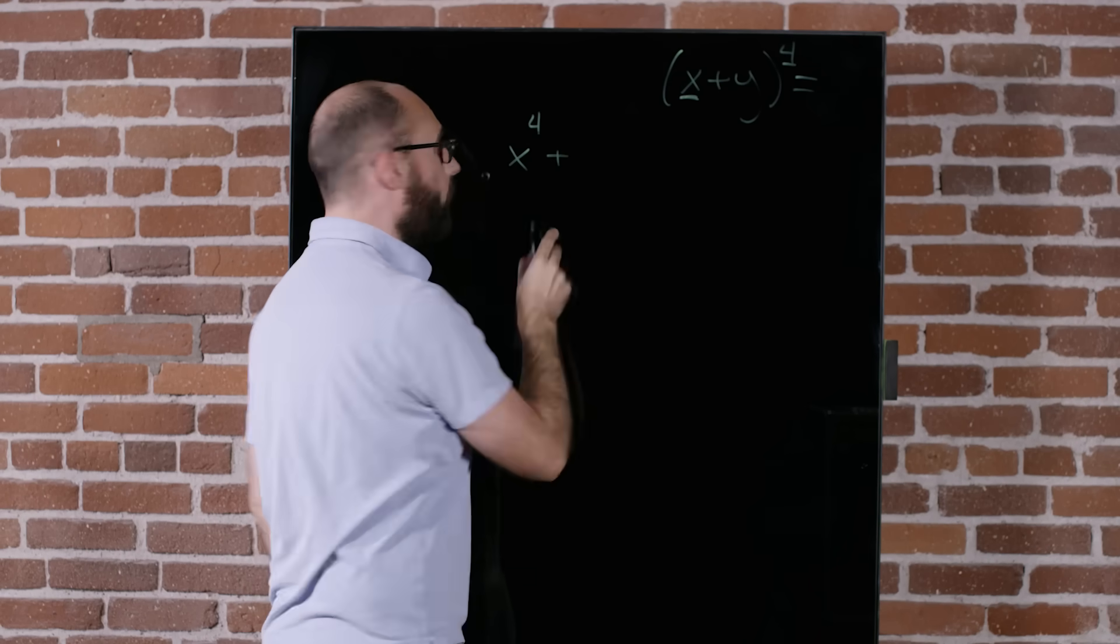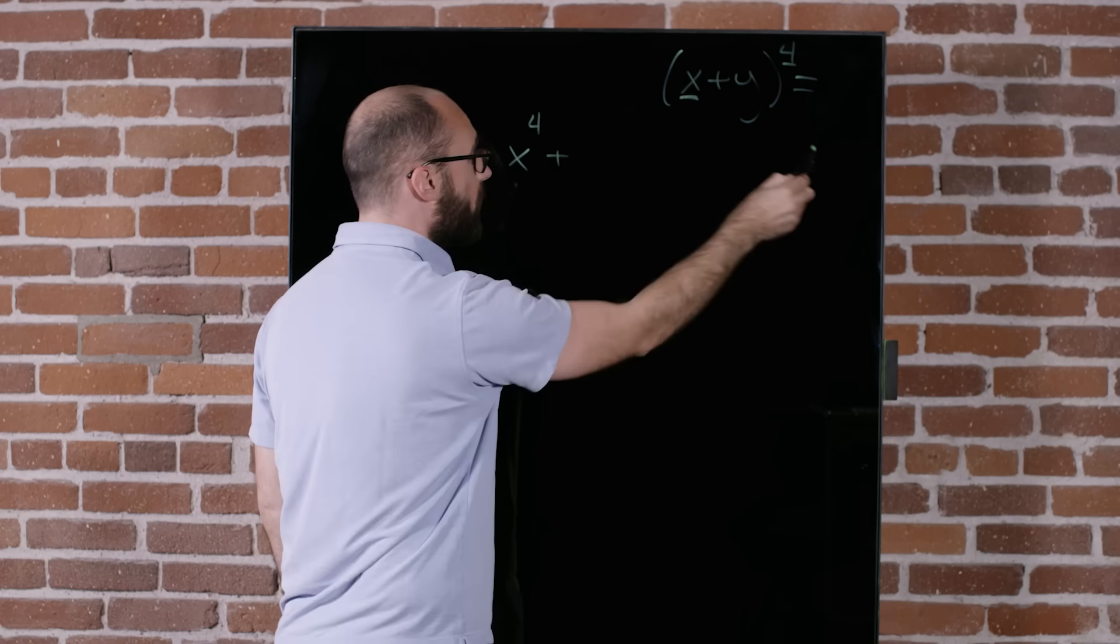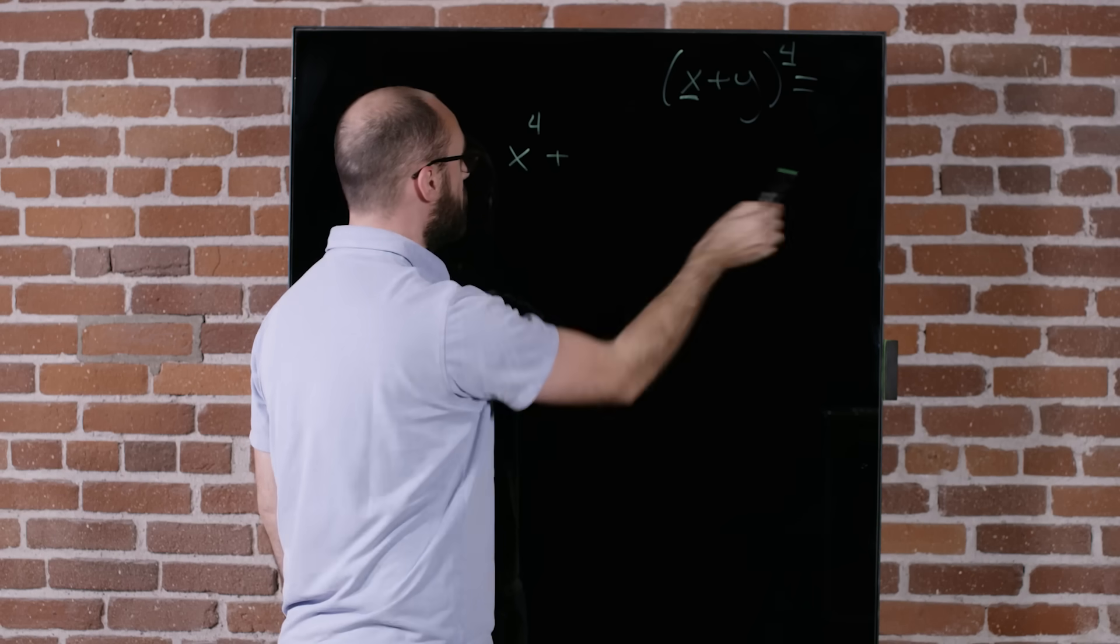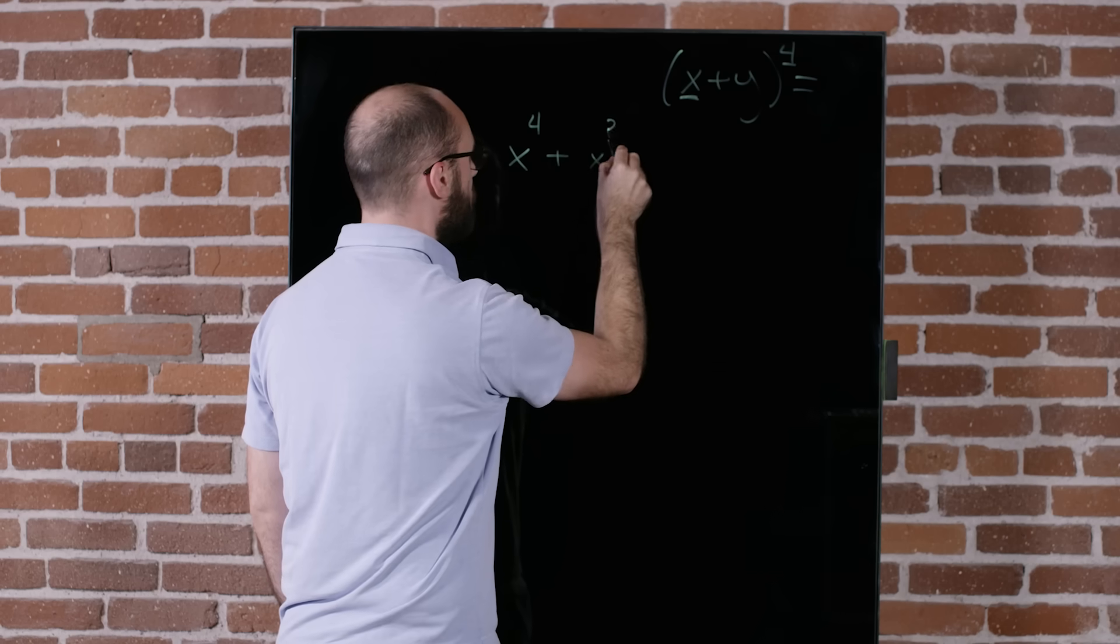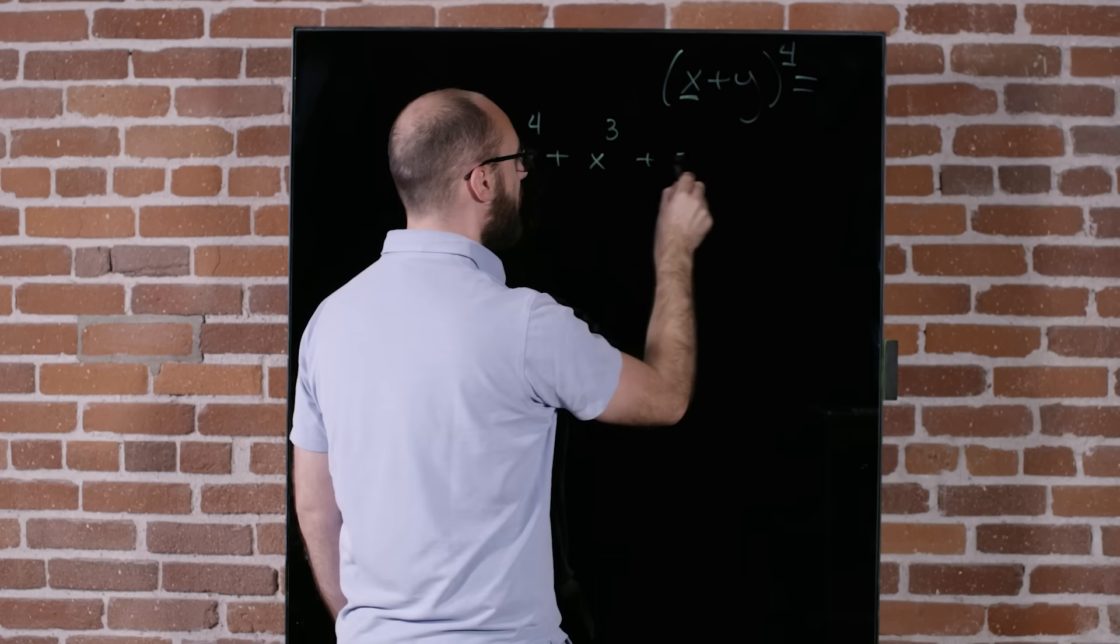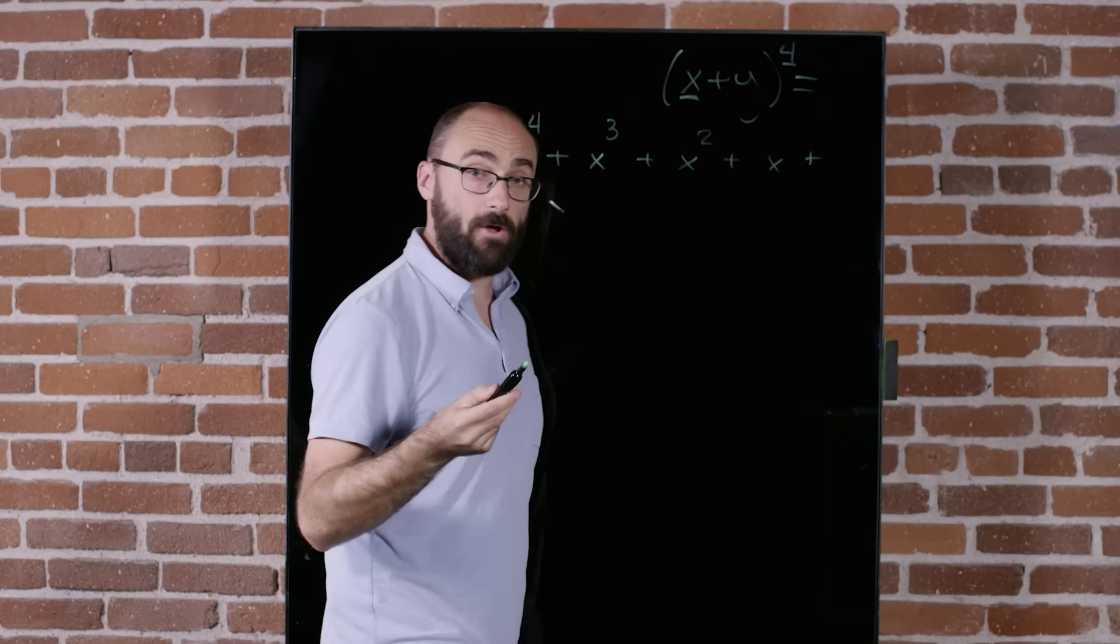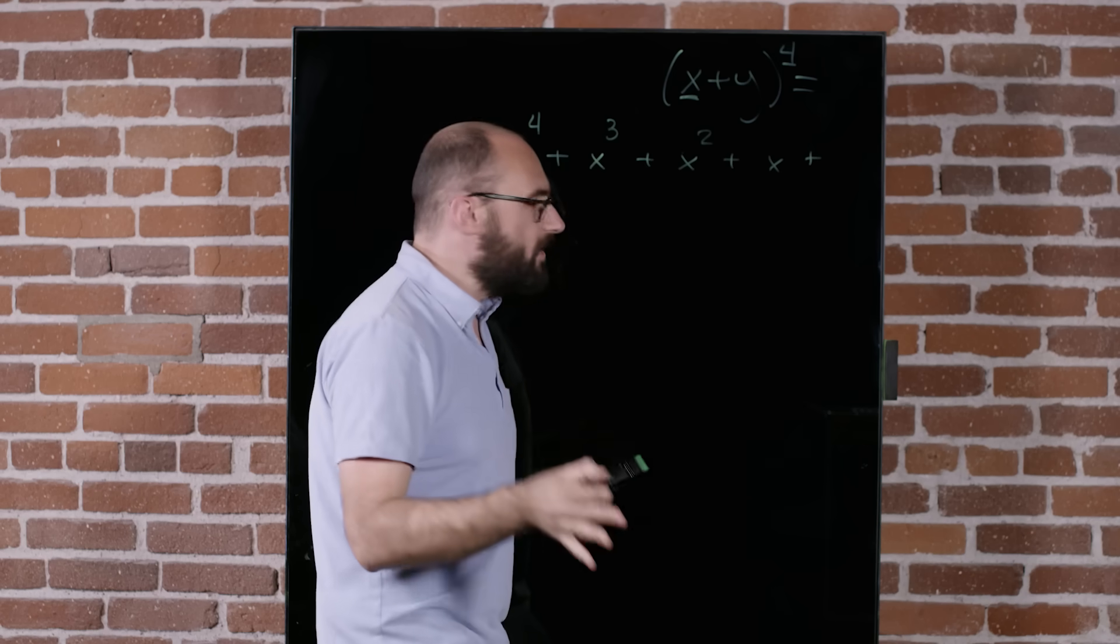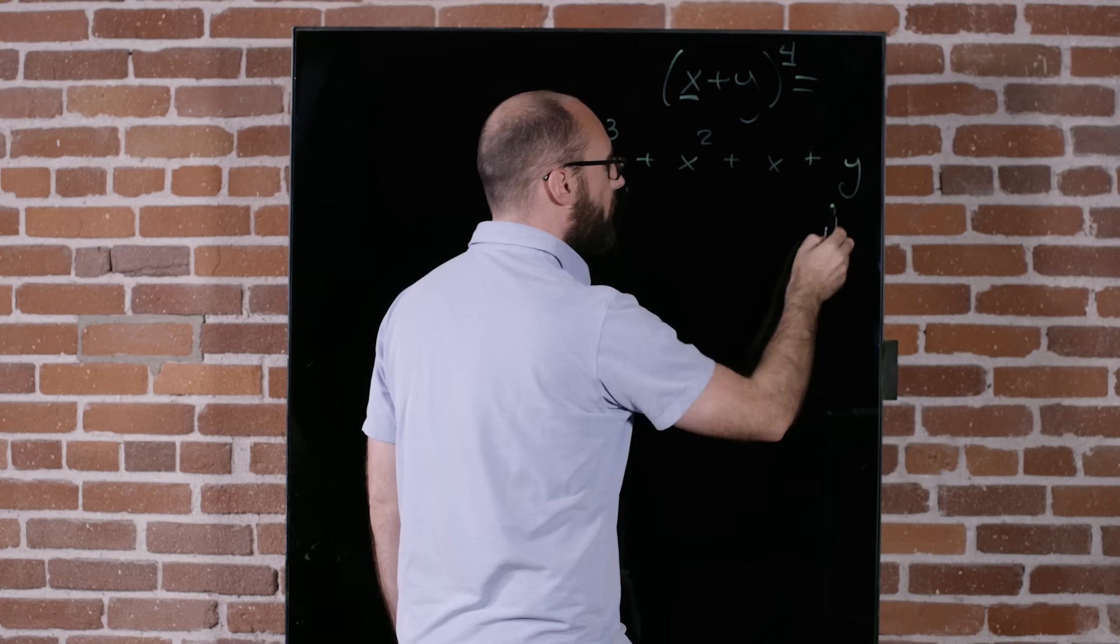Now, we're going to add to that a whole string of x's to powers that go down by one each time. 4, 3, 2, 1, 0, and so on. So the next term will be x to the third power, and then x squared, and then x to the first power, and then x to the zeroth power, which is just 1. So I don't even need to really draw it because this is where the y goes, and y times 1 is just y.